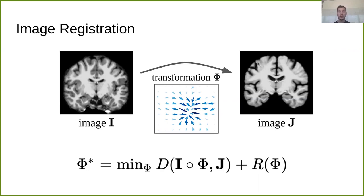We try to find an optimal transformation phi star by minimizing an energy equation or loss function, consisting of a distance measure D where we judge the distance between the aligned image I composed phi and the target image J and a regularizer R. In this regularizer R, we regularize the transformation.